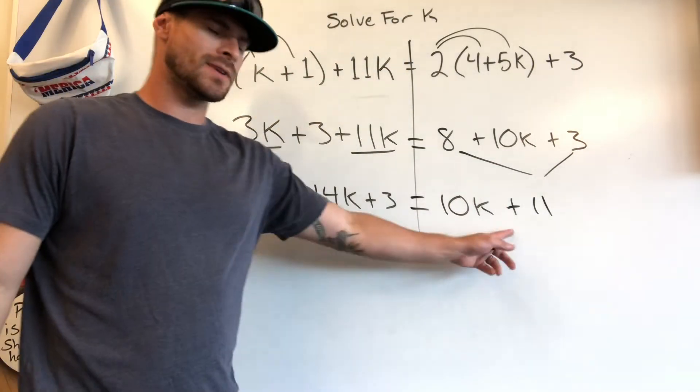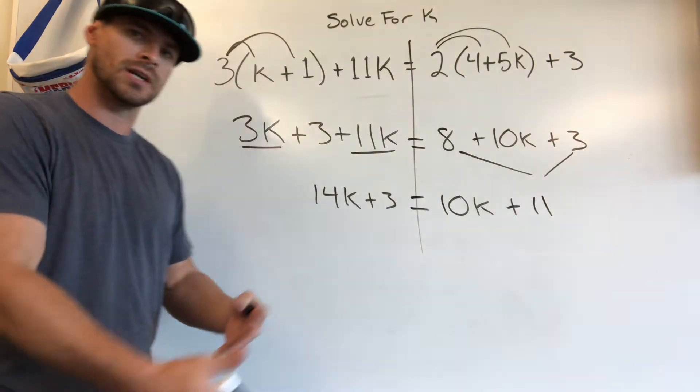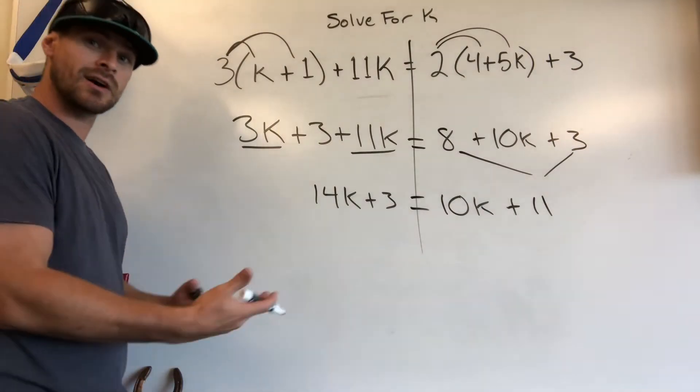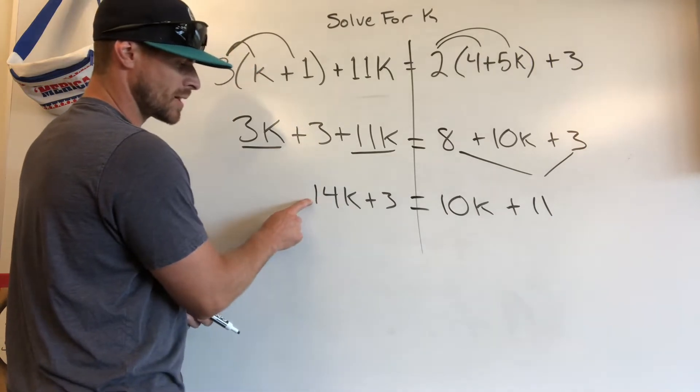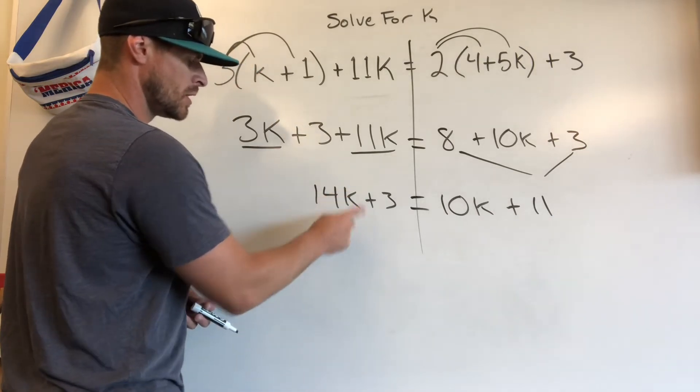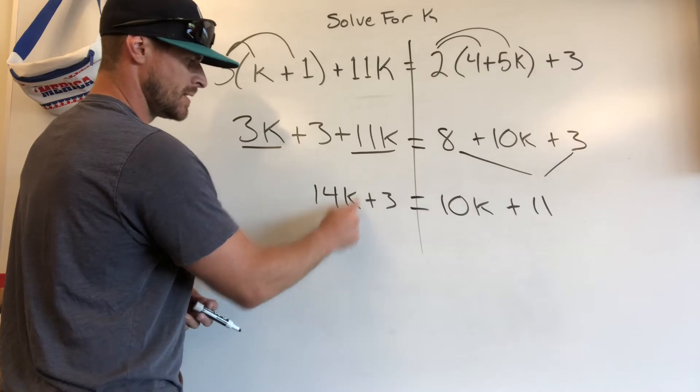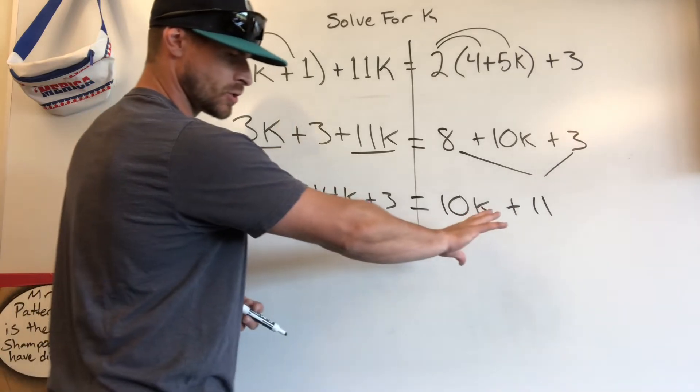So now we've got variables on both sides. I always recommend that my students get the variables to the same side first instead of the constants. So 14k, we want to use an inverse operation. This is a positive term, so to get rid of it, we would subtract 14k to cancel it out, and that would push it to the right side.